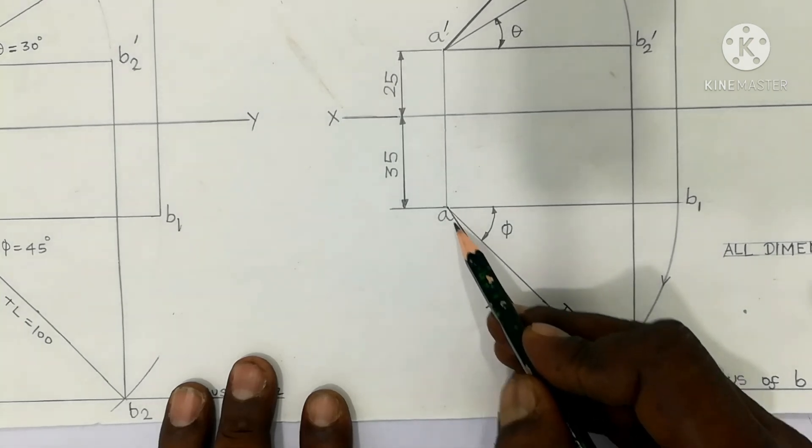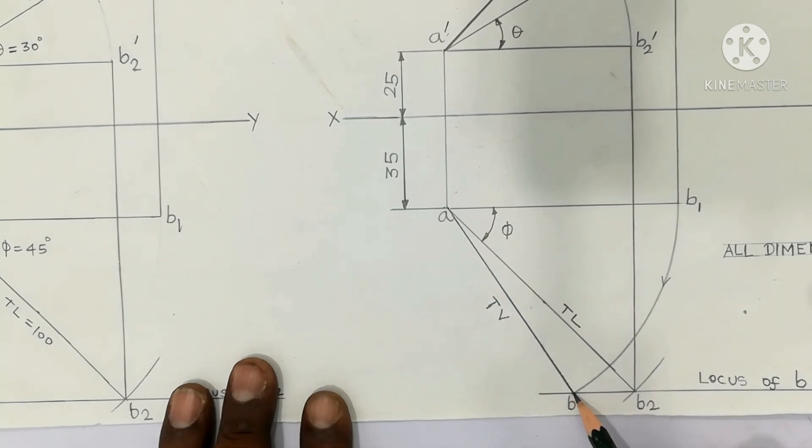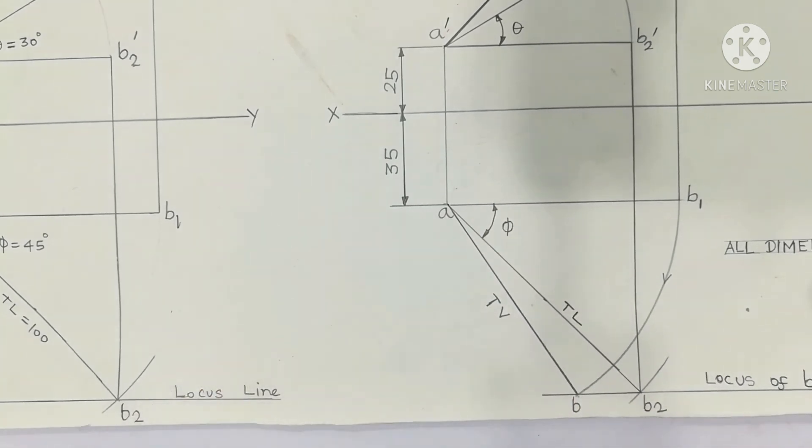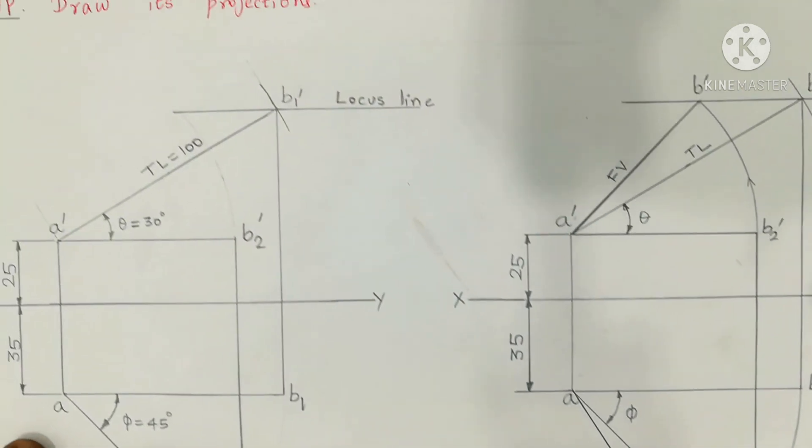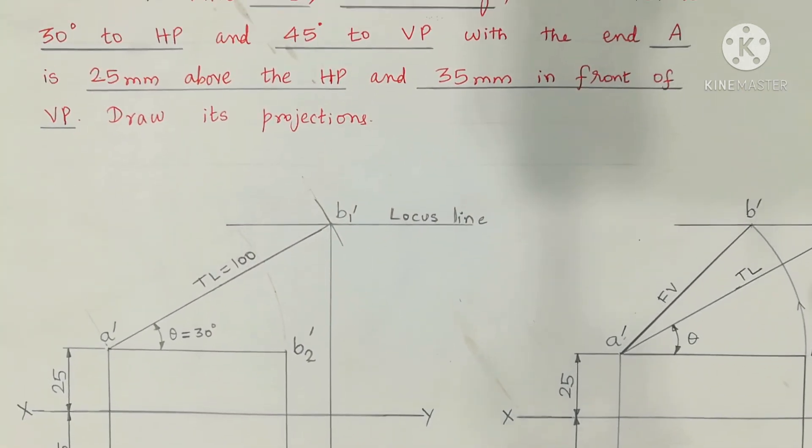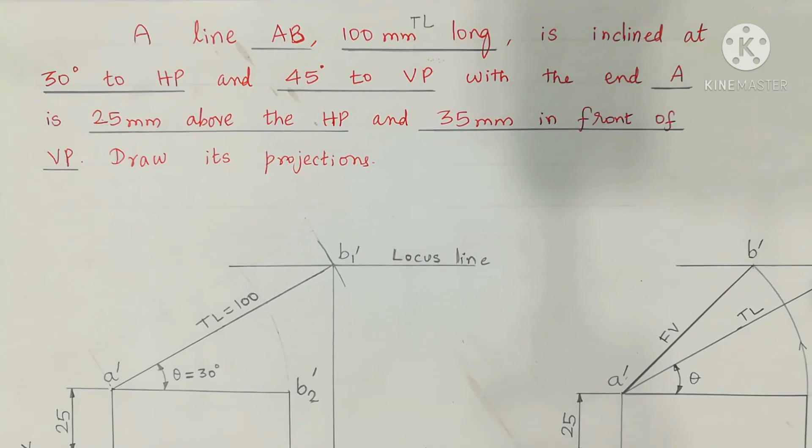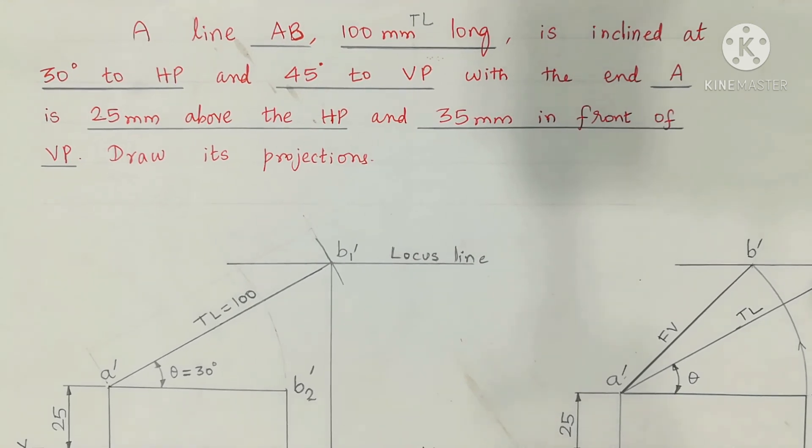AB joint final top view by HP pencil appears to be dark. Draw its projections, angle theta, angle inclination HP is 30 degrees, inclination VP 45 degrees. Final front view, final top view, draw its projections.